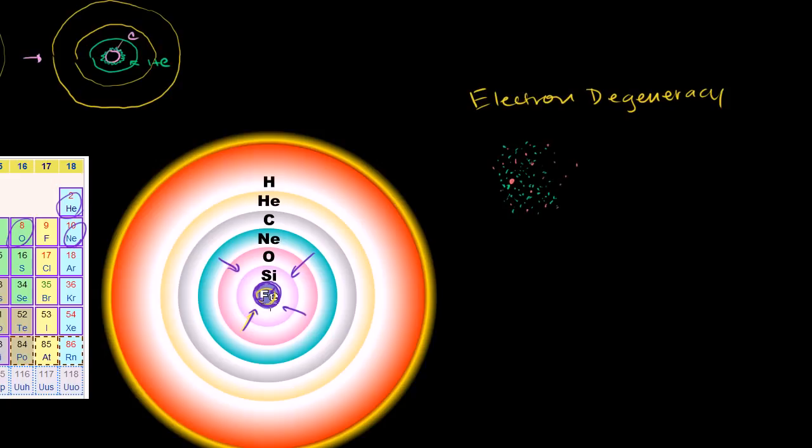But as this iron core gets even more massive, more dense, and we get more and more gravitational pressure. So this is our core now, even more gravitational pressure. Eventually, even this electron degeneracy, this outward pressure, this thing that keeps it from collapsing, even that gives in.